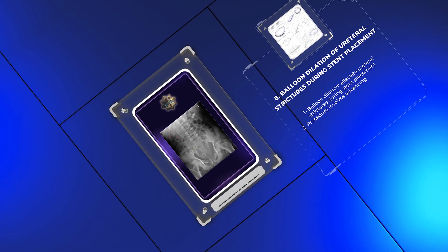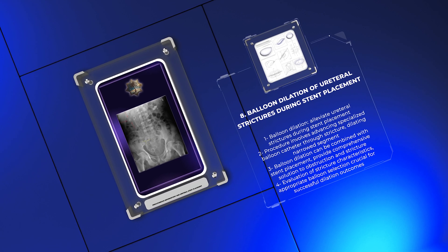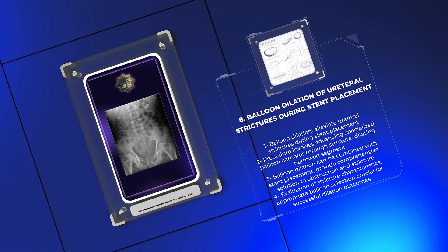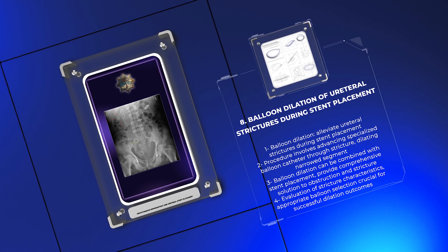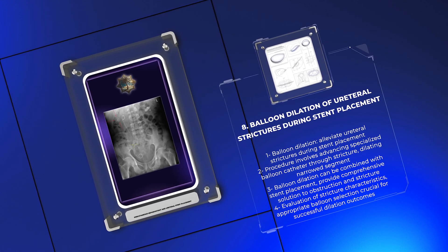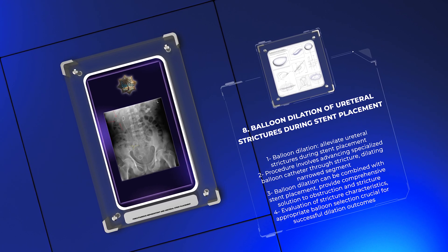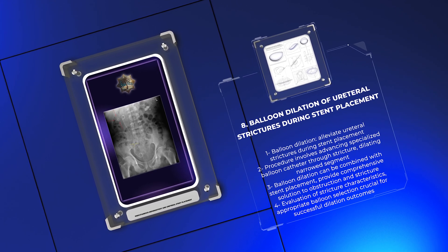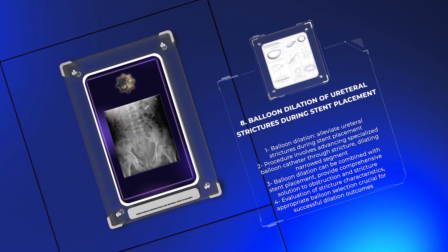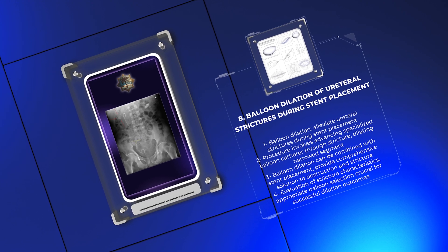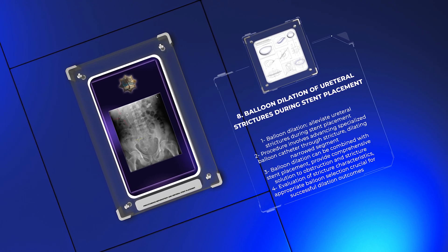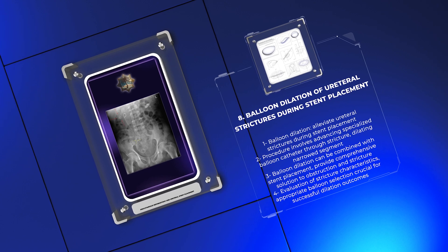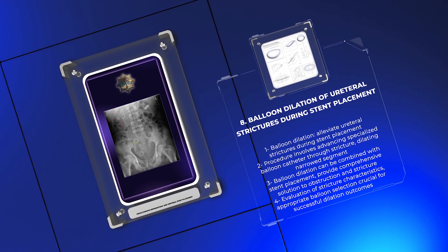Balloon dilation is a technique used to alleviate ureteral strictures during stent placement. This procedure involves advancing a specialized balloon catheter through the stricture and dilating the narrowed segment to restore adequate ureteral patency. Balloon dilation can be performed in combination with ureteral stent placement, providing a comprehensive solution to both the obstruction and the stricture. Careful evaluation of the stricture characteristics and appropriate balloon selection are crucial in achieving successful dilation outcomes.